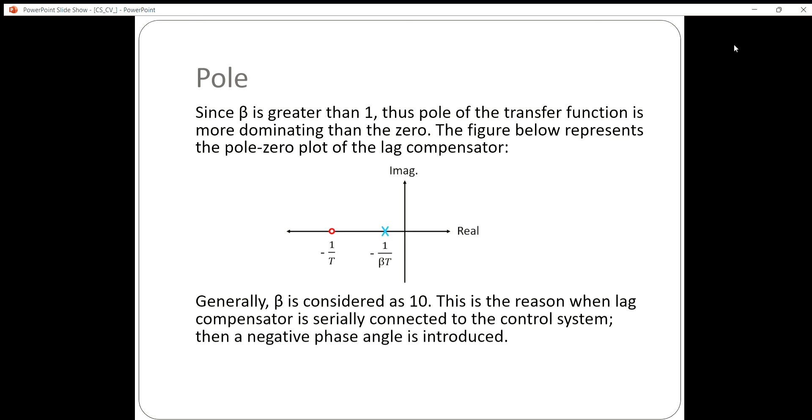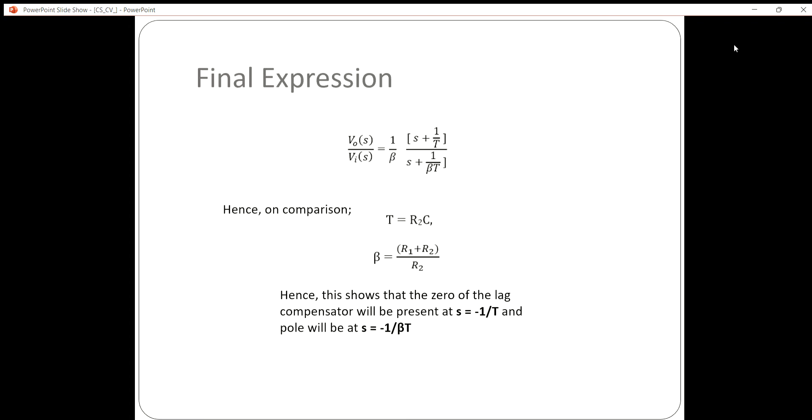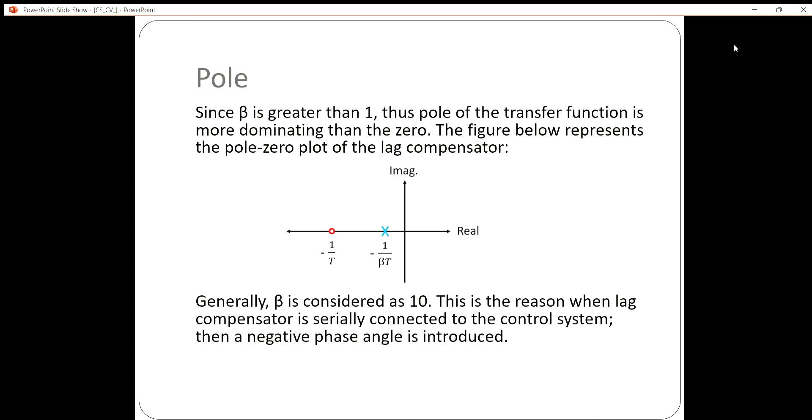The figure below represents the pole-zero plot of the lag compensator. Generally, β is considered as 10. This is the reason when lag compensator is serially connected to the control system, a negative phase angle is introduced. The imaginary part is given on the y-axis while the real part is drawn on the x-axis. We have plotted the points s = -1/τ and s = -1/(βτ) with respect to the real and imaginary parts.